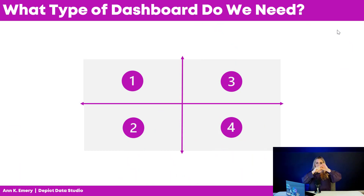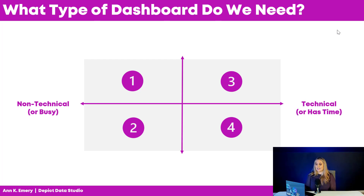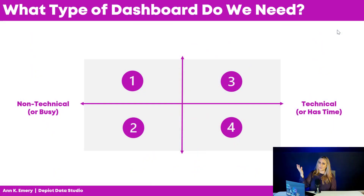The first thing you need to talk about with your colleagues is where your audience falls on different spectrums. The first spectrum is the non-technical to technical spectrum. Another distinction is availability and time — just how much time do these people really have? You might have a technical audience that doesn't have time, so I'd put them on the non-technical side. If your audience is non-technical or busy — like a lot of supervisors with long to-do lists — they don't always have the luxury of time to log in and look at your carefully crafted dashboard. We have to plan for that.